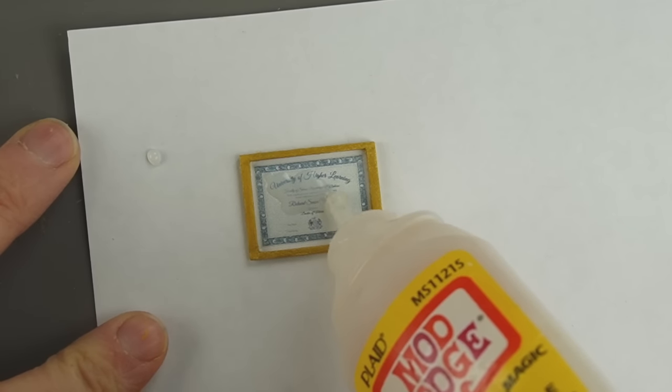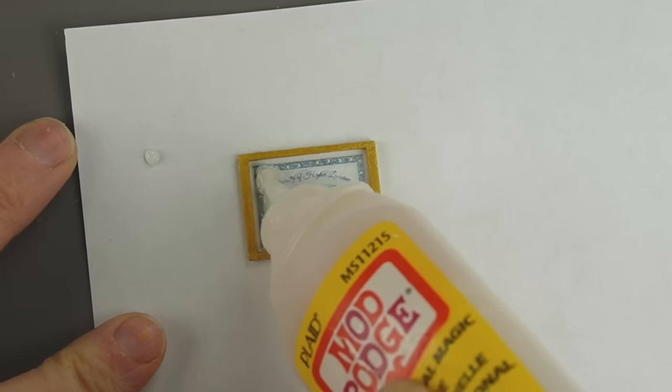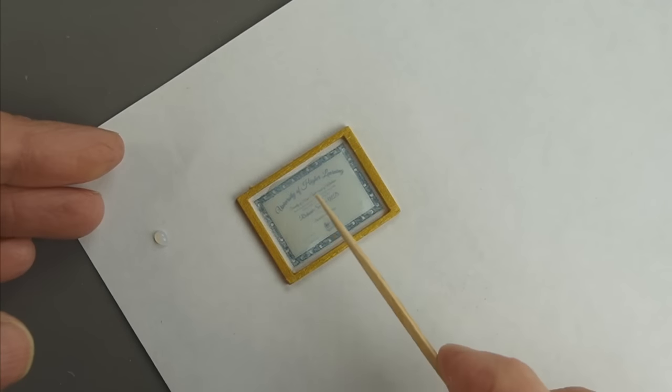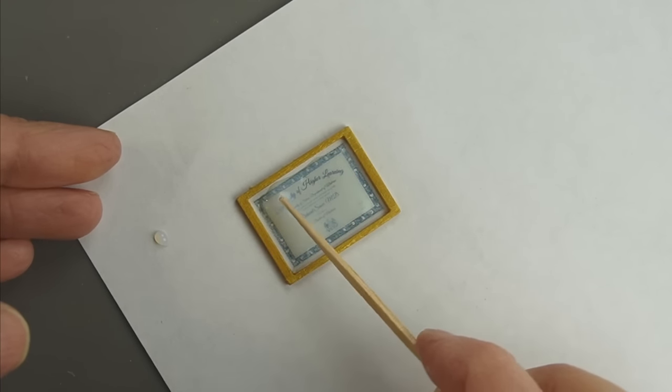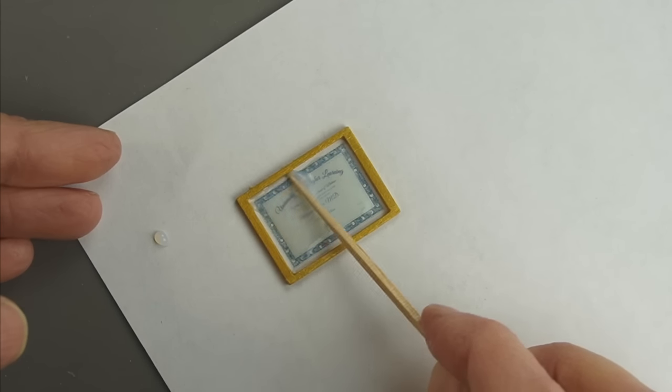I'm gluing the frame directly to the paper and using Dimensional Magic from Mod Podge to look like the glass. If you don't have the product I'm using, you could also use trash plastic as glass. I didn't age the certificate before sealing it up because it's protected by the glass. This product has a high water content, so it makes the paper ripple, but we'll see how it looks when it dries.